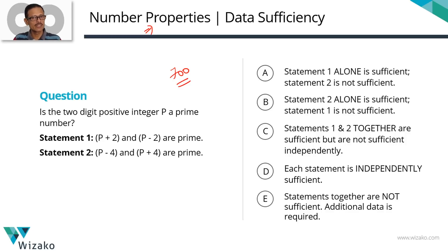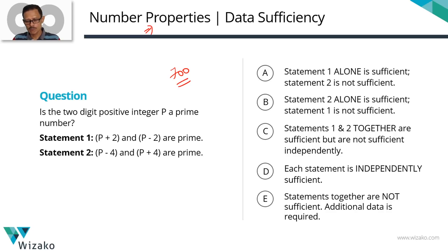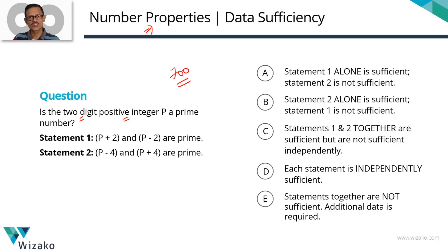The methodology and logic we'll be using to evaluate the statements — to check whether they are sufficient — is something we can think of as a framework if we come across statements of this kind. Let's get started. The question stem asks: Is the two-digit positive integer P a prime number? Key data: it's a positive integer and it's a two-digit positive integer. Keep track of this — it will come in handy to determine whether the statements are sufficient.